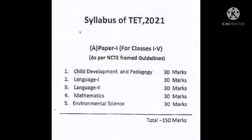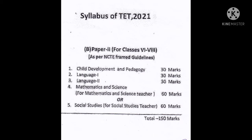Moving on to Paper Two, which is for the ME section — this paper also consists of a total of 150 marks. The first three segments are the same as Paper One: Child Development and Pedagogy, Language One, and Language Two. If a candidate wants to be a Mathematics or Science teacher, they should select option four — Mathematics and Science — which is of 60 marks. Otherwise, they should opt for option five, Social Studies, which is also of 60 marks.